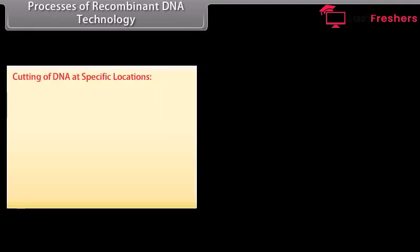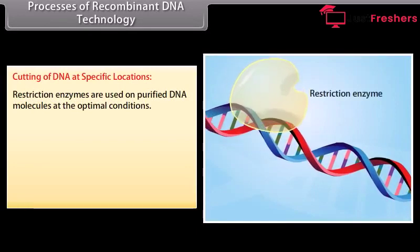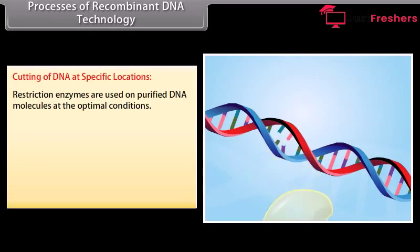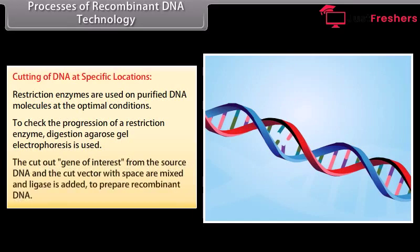Cutting of DNA at specific locations. Restriction enzymes are used on purified DNA molecules at optimal conditions. To check the progression of a restriction enzyme digestion, agarose gel electrophoresis is used. The cut-out gene of interest from the source DNA and the cut vector with space are mixed, and ligase is added to prepare recombinant DNA.